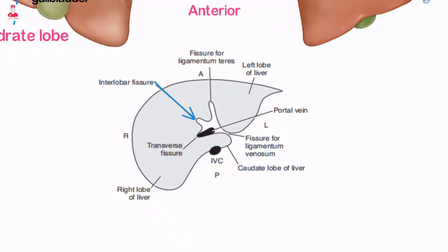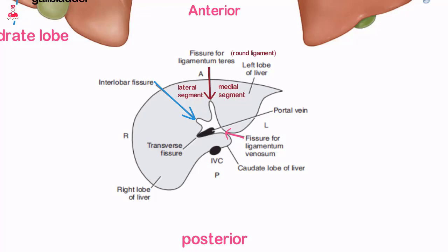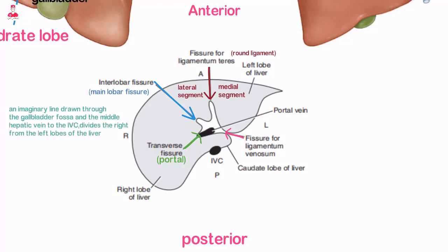Within the liver there are several main grooves or fissures useful in defining the lobes and boundaries of the hepatic segments. The fissure for the round ligament divides the left hepatic lobe into medial and lateral segments. The fissure for the ligamentum venosum separates the caudate lobe from the left lobe. The transverse fissure contains the horizontal portions of the right and left portal veins. The interlobar fissure — an imaginary line drawn through the gallbladder fossa and the middle hepatic vein to the IVC — divides the right from the left lobes.